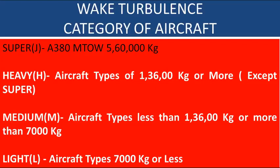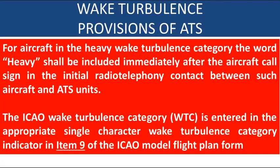Wake turbulence categories of aircraft are based on maximum takeoff weight. As per ICAO, there are four wake turbulence categories: super, heavy, medium, and light. For aircraft in the heavy wake turbulence category, the word 'heavy' shall be included immediately after the aircraft call sign in the initial radio telephony contact with the air traffic service unit. The ICAO wake turbulence category is entered as a single character indicator in item 9 of the ICAO model flight plan form.